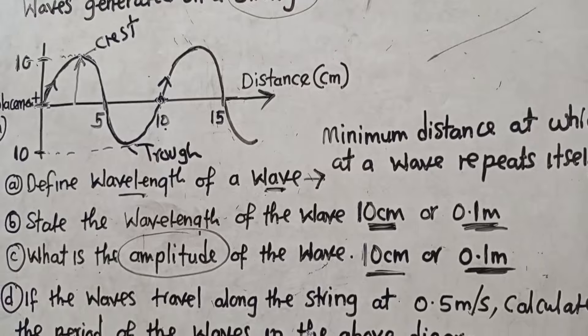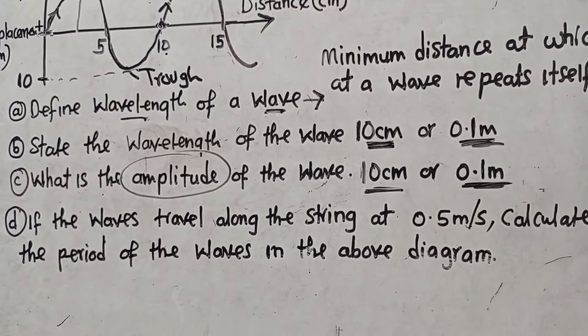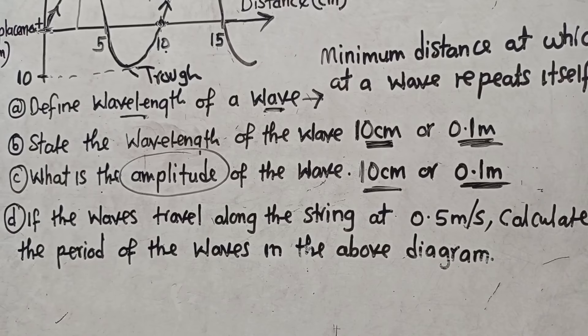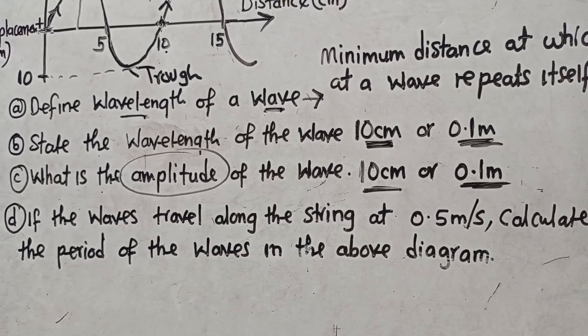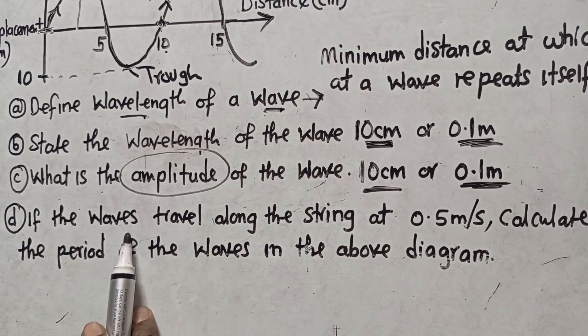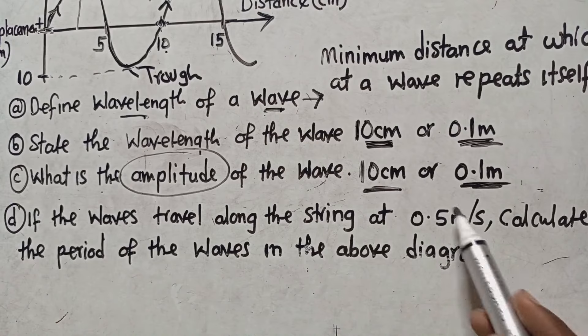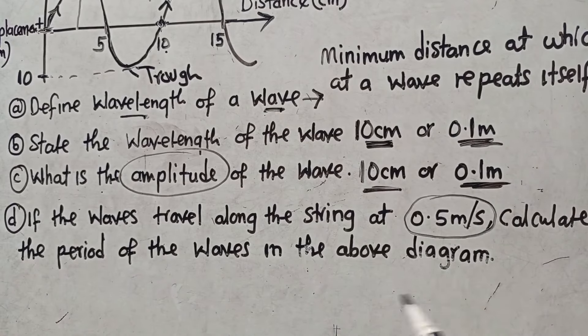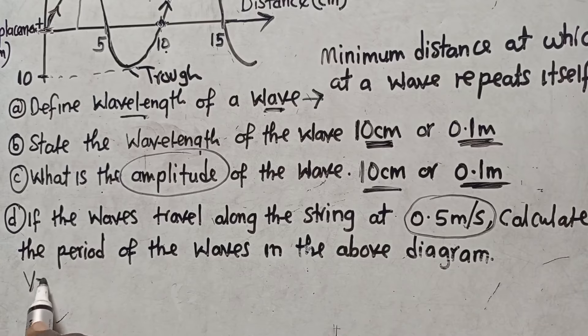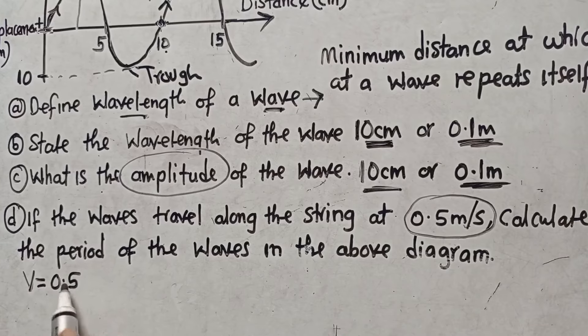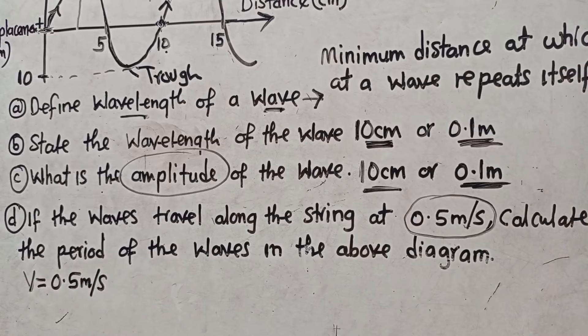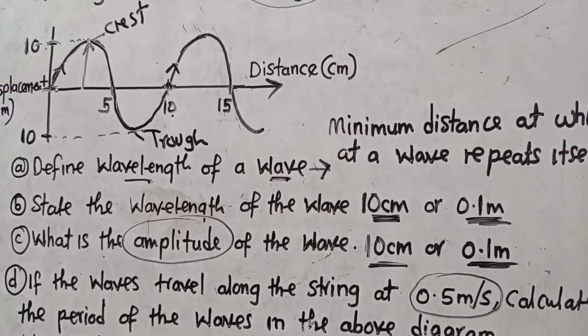We now proceed and look at the next question which happens to be our last question in this paper, so in this section that I am having with you. I guess even as we are interacting you are able to discover new things, you are getting one or two things. The question is saying if the waves travel around the string at, this is the velocity, 0.5 meter per second. Velocity is given there, 0.5 meter per second.